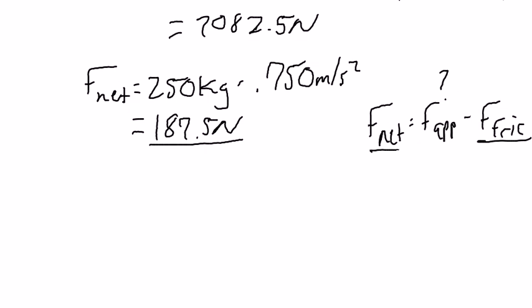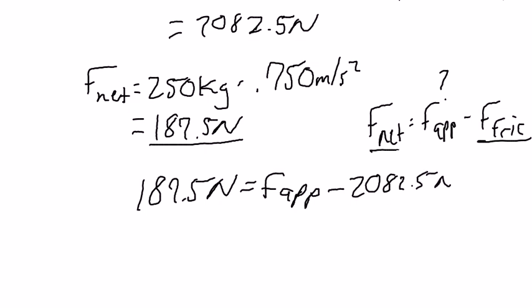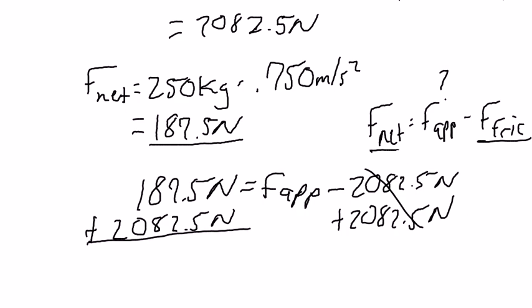Now that we're on the right track, we can plug in everything we know. We know 187.5 newtons is equal to the force applied minus the force of friction, and the force of friction is 2,082.5 newtons. Now we're going to add 2,082.5 newtons to both sides. And when you add those together, you should get an applied force of 2,270 newtons.